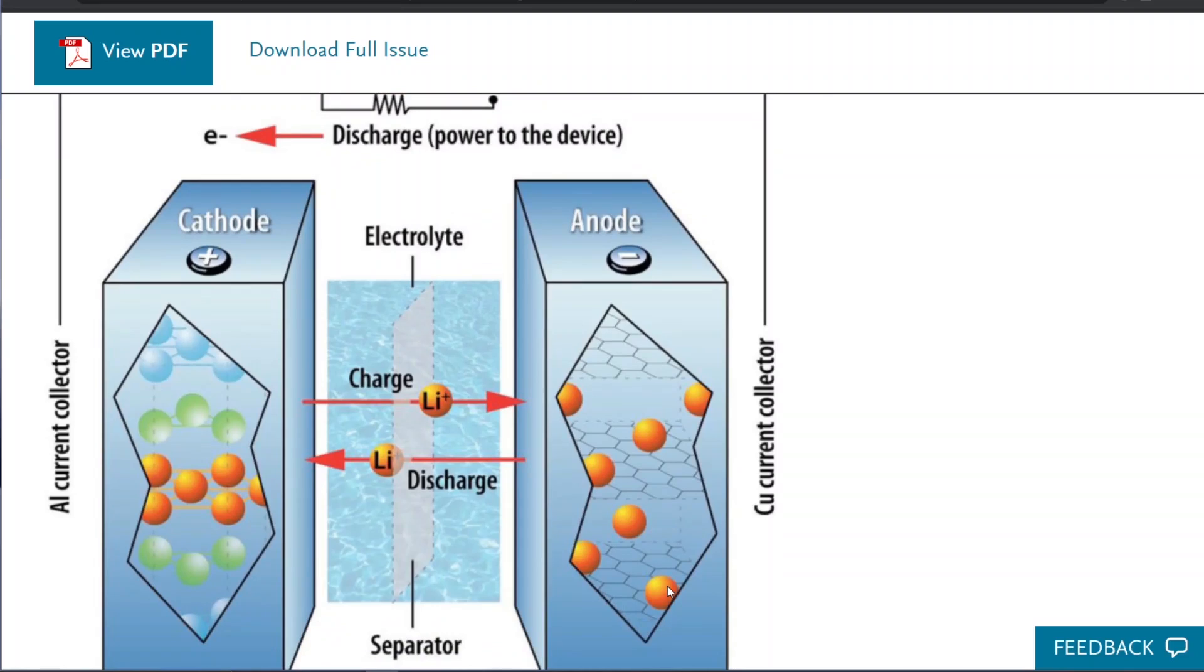So in the charged state, the lithium ions travel over to the anode and they intercalate in the graphite sheets and the silicon if you add some silicon. So Tesla and a couple other companies add a little bit of silicon to the anode, and that increases the capacity there, how much lithium ions it can hold.